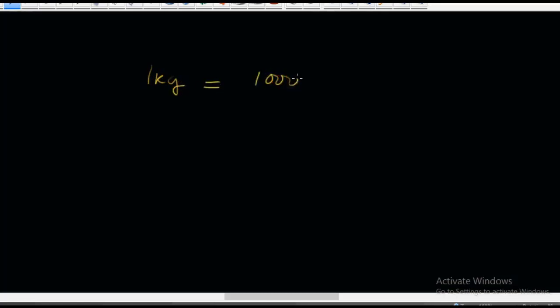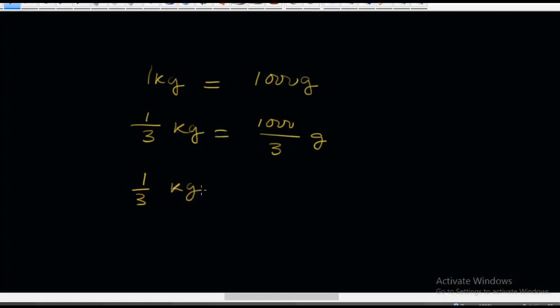What if we divide it by 3? We say 1 kilogram is equal to 1,000 grams, and then we divide it by 3. That is 1 over 3 kg is equal to 1,000 over 3, which gives us 333.3 grams. So 1 over 3 kg is equal to 333.3 grams.